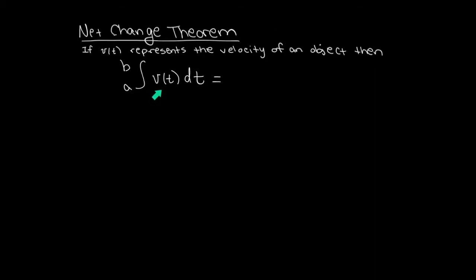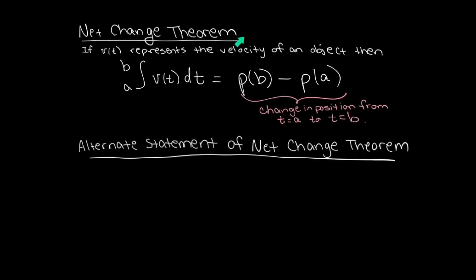Now what we just learned can be summarized in something called the net change theorem. If we take the definite integral of a velocity function, what does that represent? We found on the previous slide that it represents the change in position. The position at time B minus the position at time A. Now you might not think this is too big of a deal, but actually it's huge.